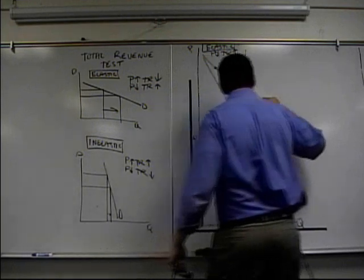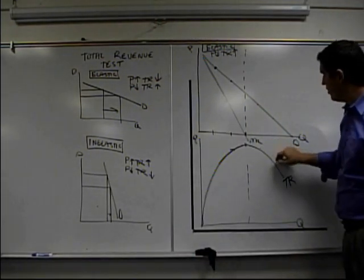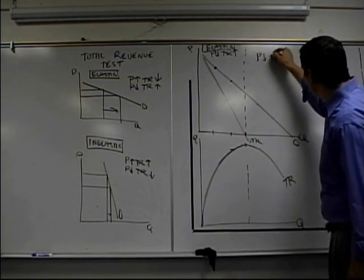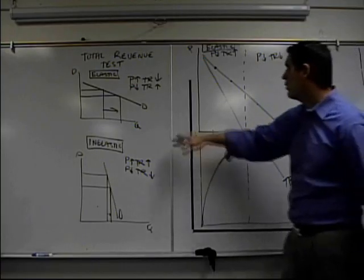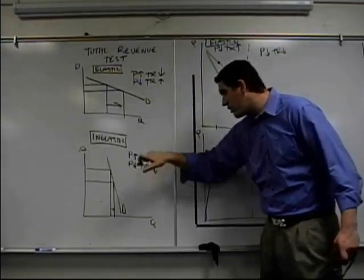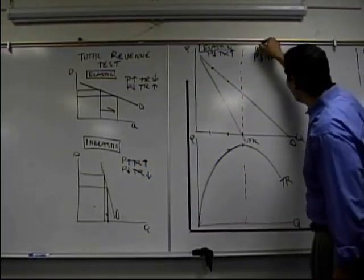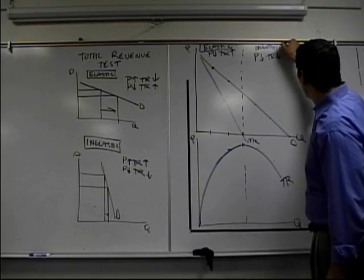Over here, price is falling from here to here. Total revenue is falling. Price is going down. Total revenue is going down. Where is that? Price going down. Total revenue going down. Boom. Right there. That is the inelastic range of the demand curve.